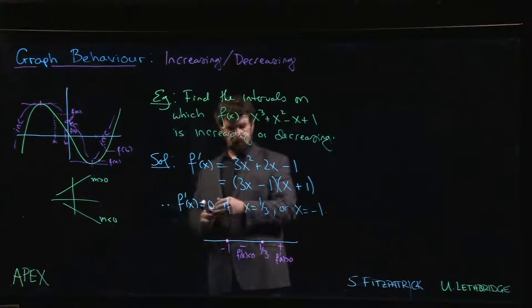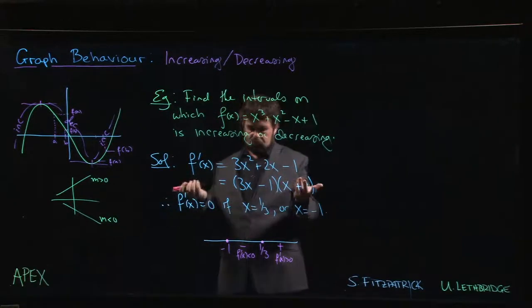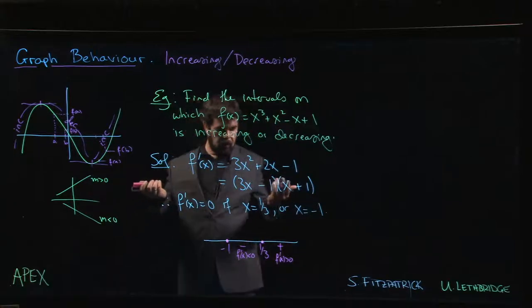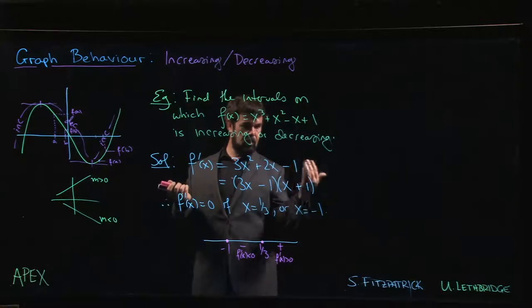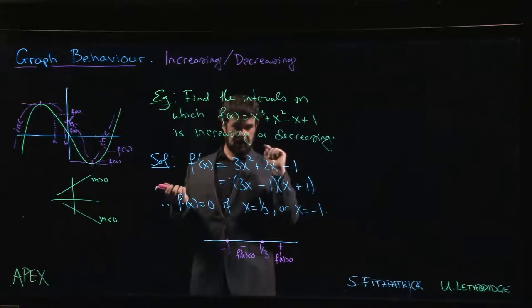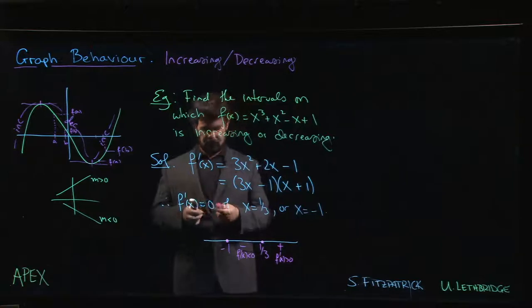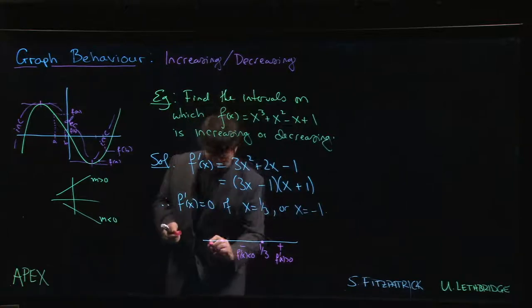What if I go something less than -1? Try -2. Well, -6 - 1, that's definitely negative. -2 + 1 = -1, negative. Negative times negative is going to be positive. So out here positive again.